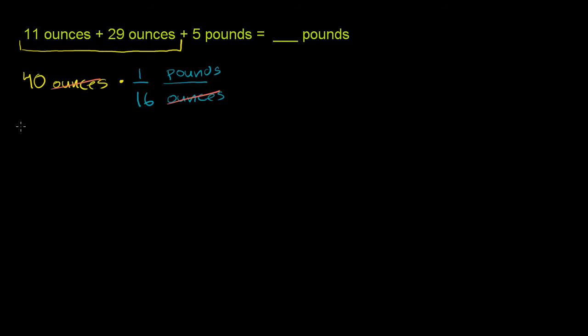And this whole quantity becomes, when you multiply it out, 40 divided by 16. 40 over 16, it's really 40 times 1 over 16, but the 1 doesn't change anything. So 40 over 16 pounds.